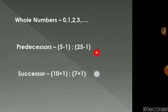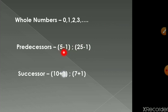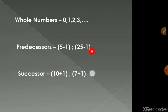Predecessor means one less than the given number. So if we are asked to find the predecessor of 5, we subtract 1: 5 minus 1 equals 4. What is the predecessor of 25? 25 minus 1, that is 24.